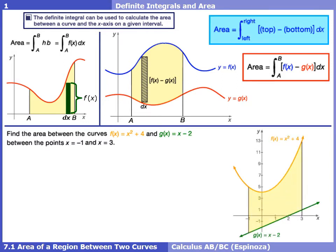We need to find the area between the curves x² + 4 and x − 2, between x = −1 and x = 3. The key to doing these problems successfully is to get a good graph of what's going on — the better the sketch, the easier it is to set up the problem. Here you can see our area, and I'll draw in that representative rectangle. It's one of an infinite amount of rectangles and will help us identify the top function and the bottom function.